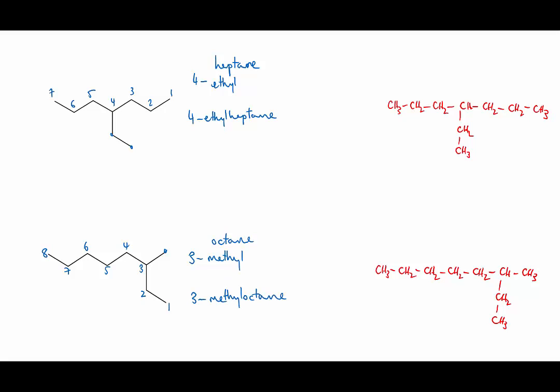A quick word on numbering the main chain. Remember the aim in the numbering is to get the lowest possible number in the name of the molecule. In this second molecule, if you were to start numbering from the left, the branch would be on carbon number 6.